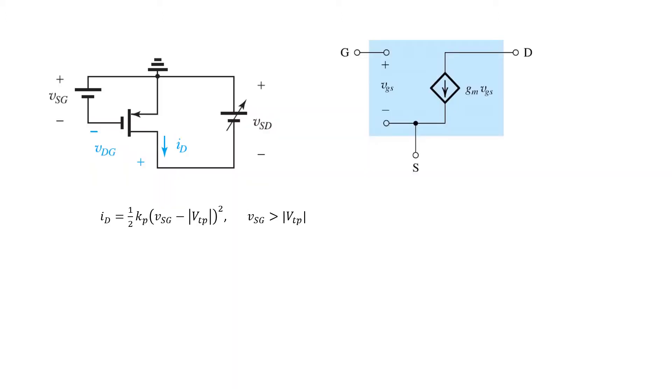Let's begin with the PMOS transistor shown here. I'm going to start with a simple but surprising assertion for people just learning electronics, which is that the small signal model for the PMOS transistor is exactly the same as the small signal model for the NMOS transistor. Many new learners have a strong intuition that the polarity of this current source should perhaps be flipped or some other polarity should be flipped. But the truth is that's not the case.